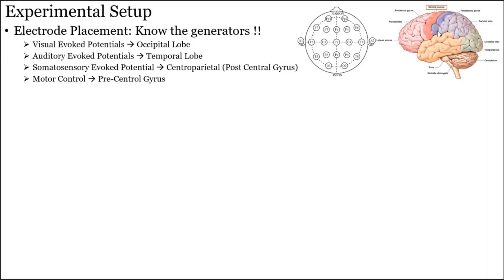Some generators are localized to specific areas of the brain. Looking at the top view of the 10-20 system, electrodes can be placed at positions like Fp1, F3, C3, P3 and others. Professor Hadik would have already covered the 10-20 system, and Dr. Mahesh has explained various regions of the brain.